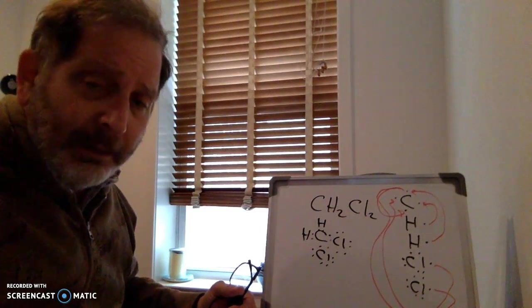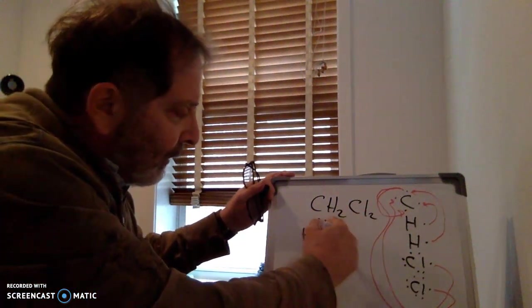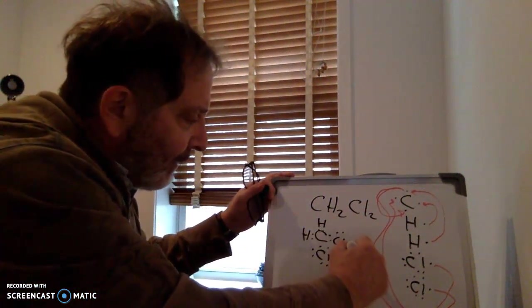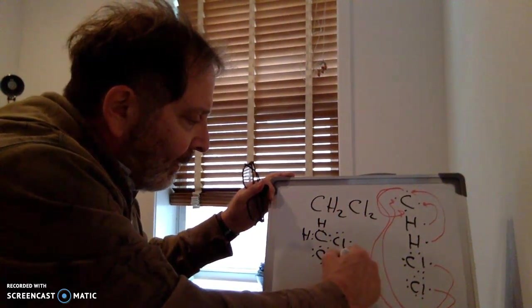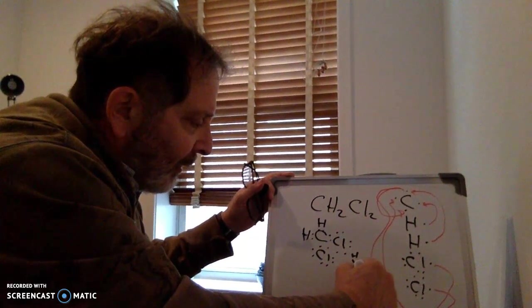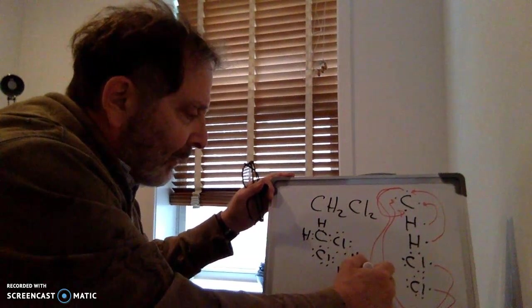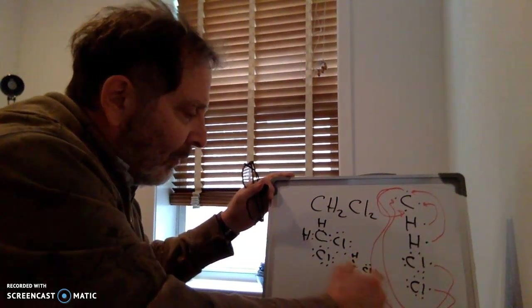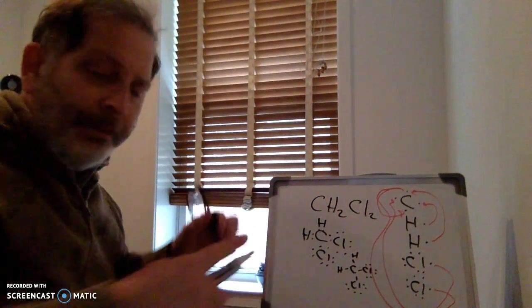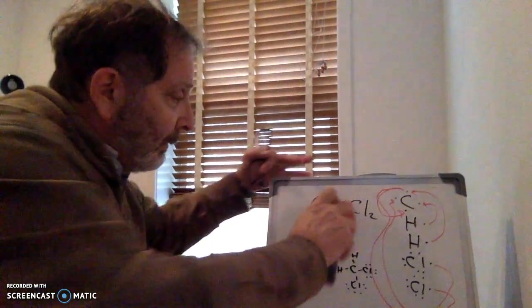And this is the Lewis structure for this particular molecule. Trichloromethane is actually the name of this. Don't worry about that. You can also put in dashed lines here. Either one is acceptable to represent the structural formula of this molecule. You want to put in the electron dots for the chlorine atom. And that's the answer. Is that what you got?